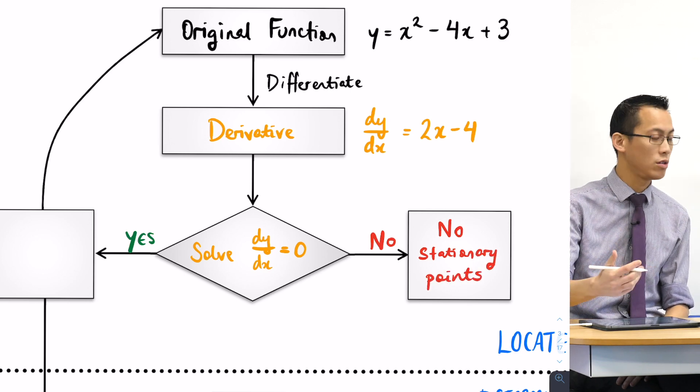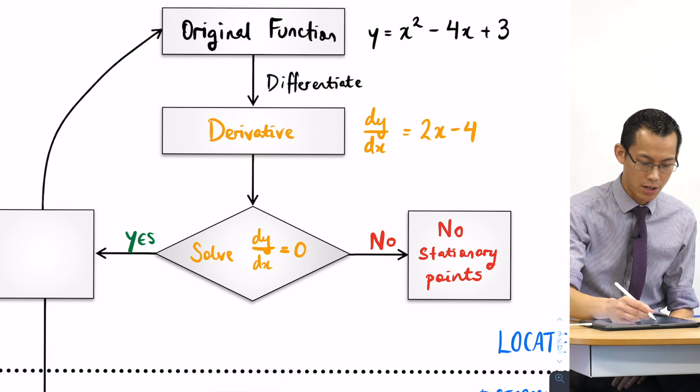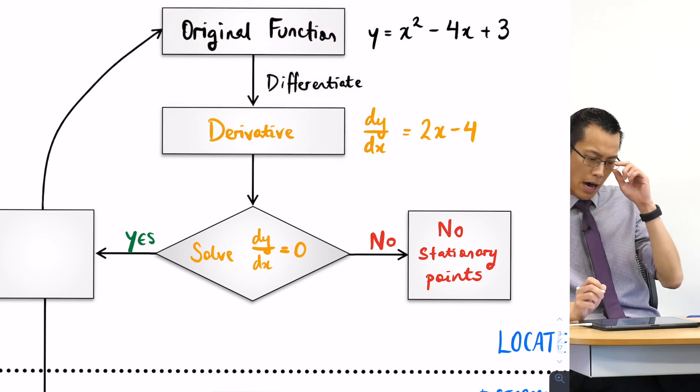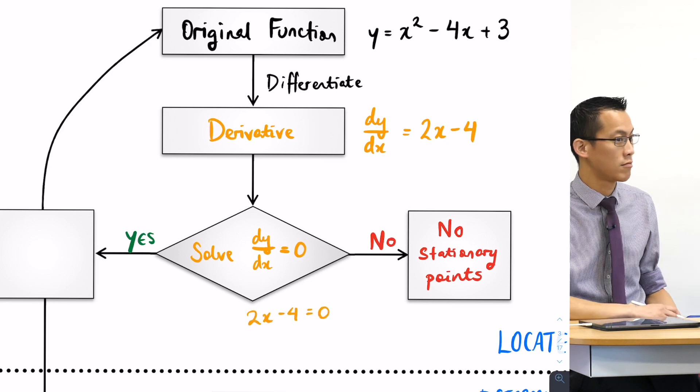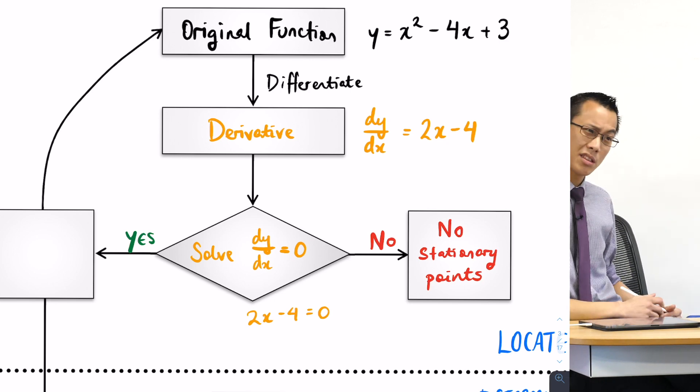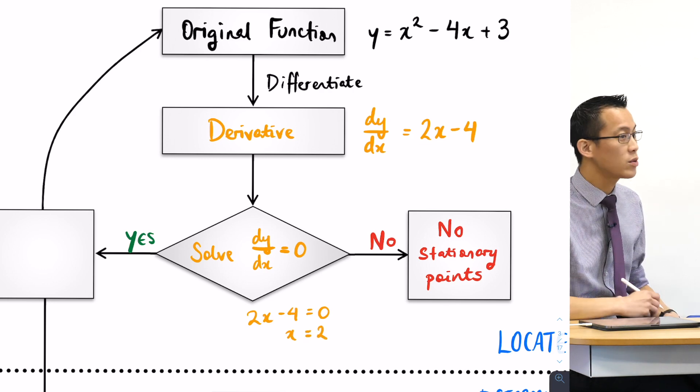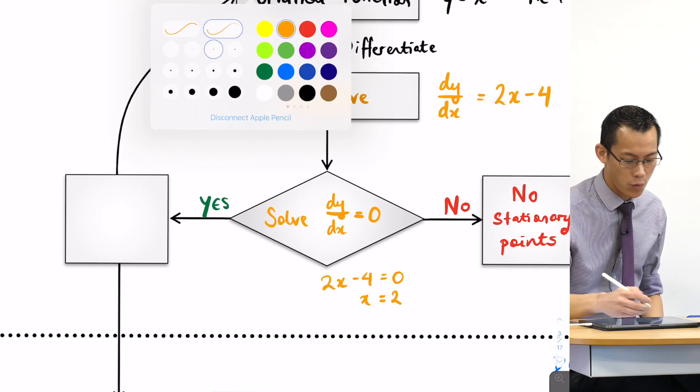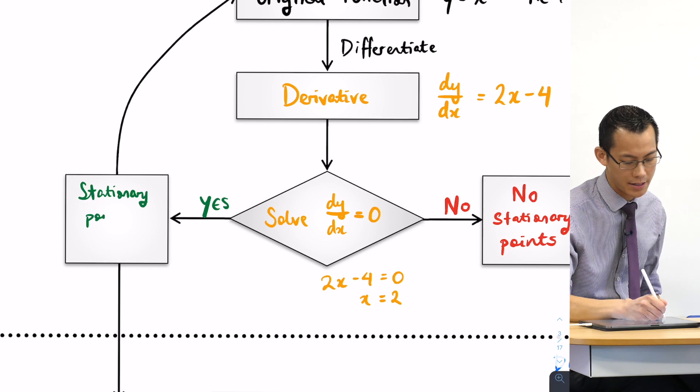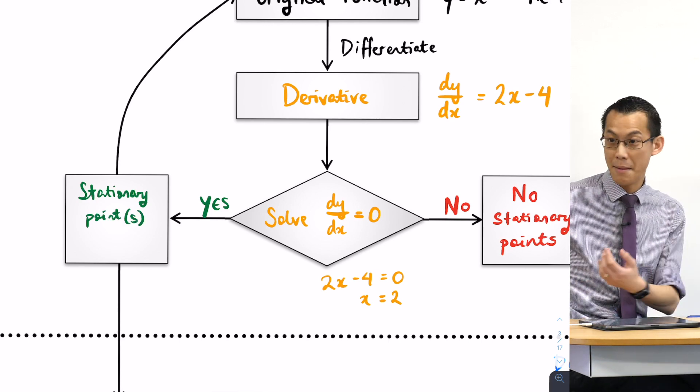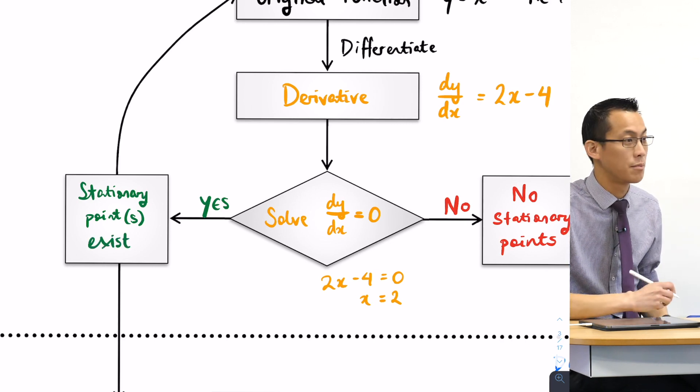Let's go ahead and solve. Here's my derivative: dy/dx equals zero, so 2x minus 4 equals zero. You guys can probably tell me what the solution is. It's x equals 2 very good. So I've got x equals 2, I found a solution and what that tells me is hooray stationary points exist. I'll put the s in a pair of brackets because there may just be one, but we at least know there are some to work with.